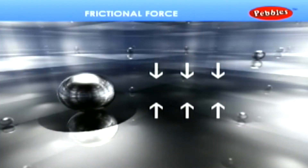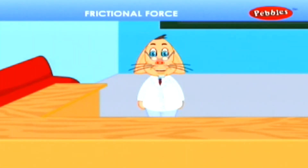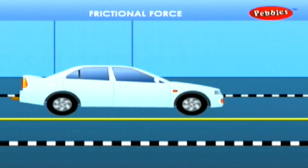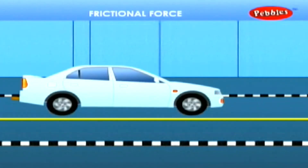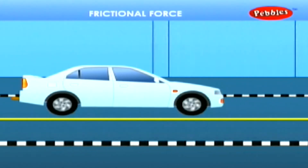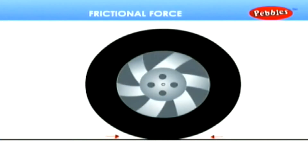The force acting between two surfaces in contact and tending to oppose motion is called the force of friction or frictional force. Observe this car moving on the road. The driver wants to stop the car by the yellow line. He operates the car brake. The car slows down but has crossed a little beyond the yellow line. The reason is the tire tread is worn out — there is no gap between the road surface and the tire bottom, so there is no way for air to penetrate and it lacks grip on the road.